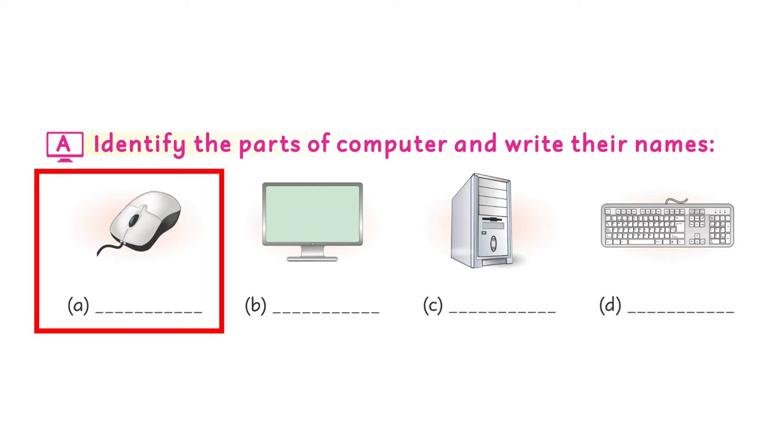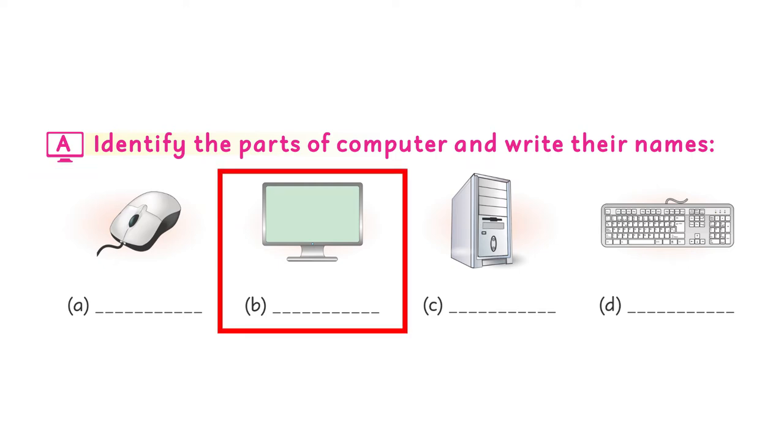This part is computer mouse. So we will write here mouse, M-O-U-S-E mouse. This part is B part. We will write monitor, M-O-N-I-T-O-R monitor.